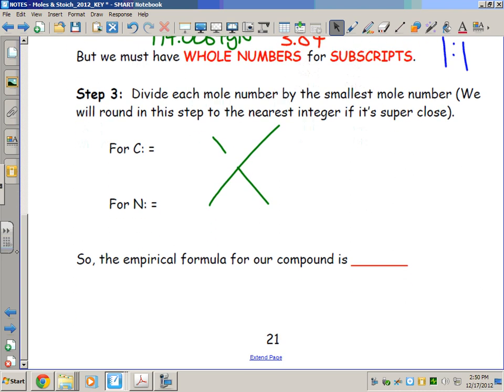That gives us a one-to-one ratio, and that means that the empirical formula for the compound would be CN. If you wrote in the ones, that's fine. We don't have to worry about them - when the subscript is one, we can just leave it C1N1 or CN. This is the empirical formula. It means that the ratio of carbon to nitrogen in this compound is one to one.